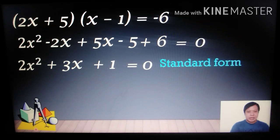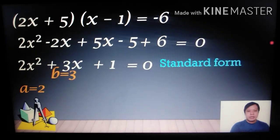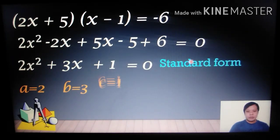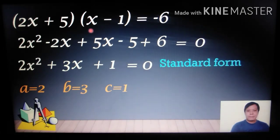Now we can identify a, b, and c from the standard form 2x² + 3x + 1 = 0: a = 2 (coefficient of x²), b = 3, and c = 1.